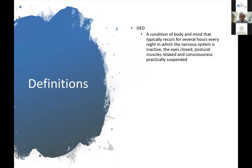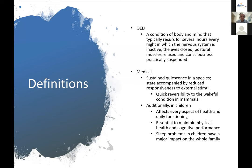The Oxford English Dictionary defines sleep as a condition of body and mind that typically recurs for several hours every night, in which the nervous system is inactive, the eyes closed, the postural muscles relaxed, and consciousness partially suspended. In medicine, we say it's a sustained quiescence, accompanied by reduced responsiveness to external stimuli. In mammals, there is very quick reversibility to the wakeful condition because they need to be on high alert in case of threats.